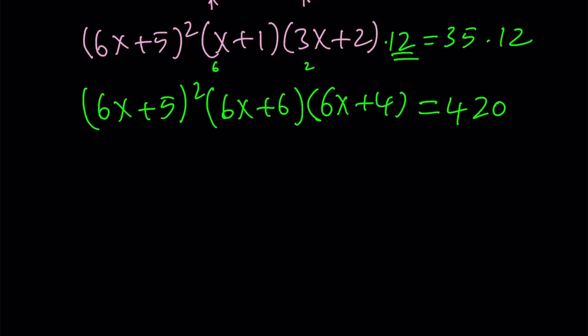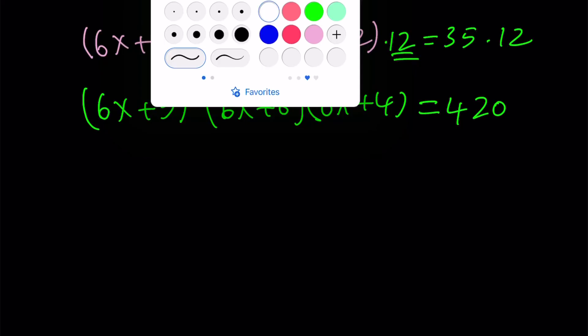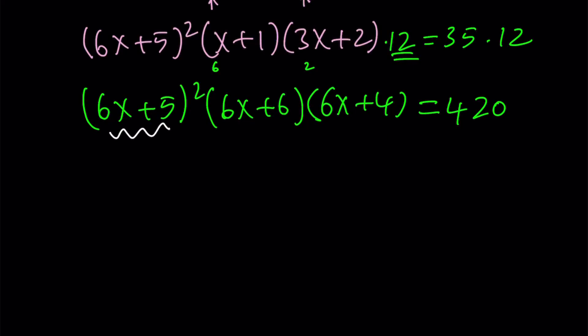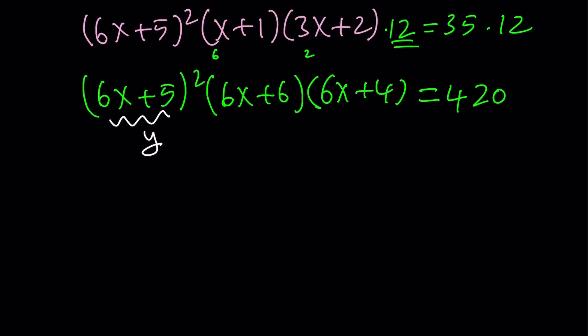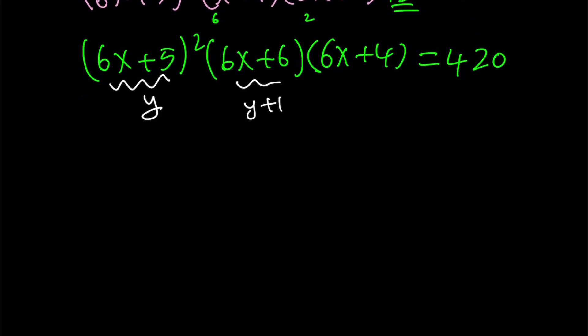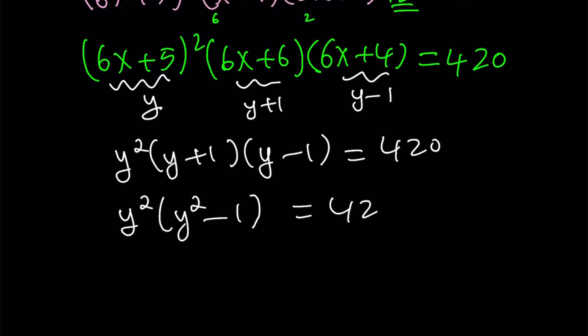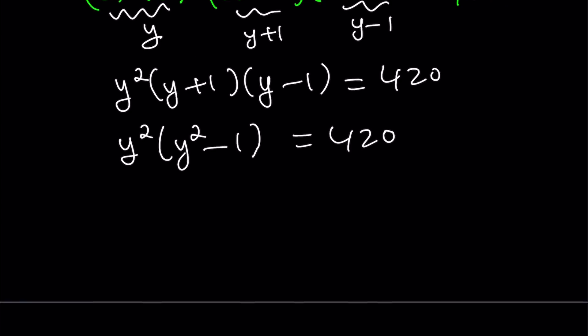Ignore the square for now. I can use my favorite method, which is substitution. I'm going to call this y. And you know why. If I call that y, this is going to be y plus 1, and this is going to be y minus 1. This is going to give me y squared multiplied by y plus 1, multiply by y minus 1 equals 420. But y plus 1 and y minus 1 are good friends. When you multiply them together, kind of like conjugates, you get difference of two squares, which is y squared minus 1.